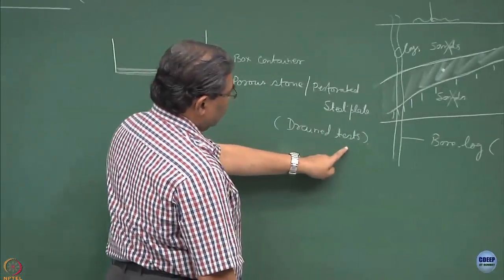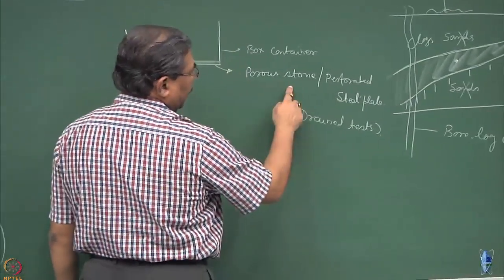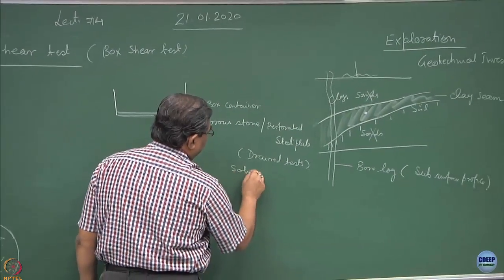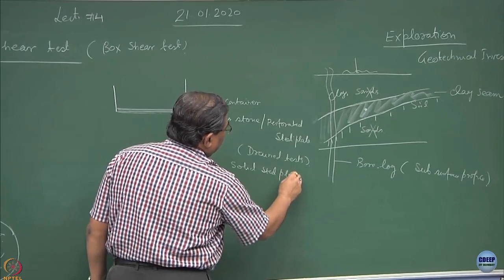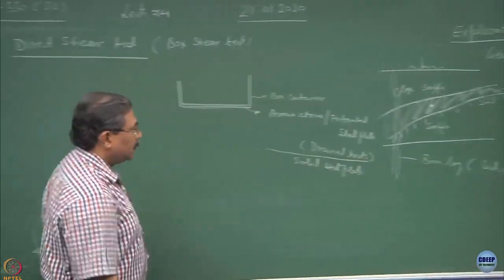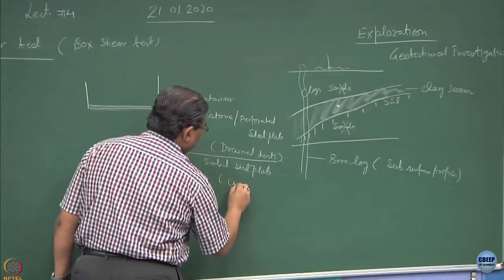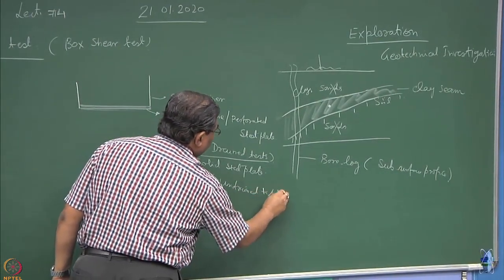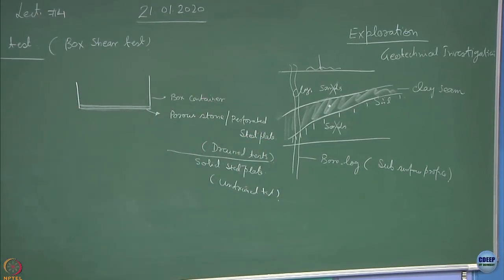This is where actually I am trying to emphasize on and if I replace it by a solid steel plate, I am not allowing any drainage to occur. This becomes the undrained test. So this is how the boundary conditions can be changed.